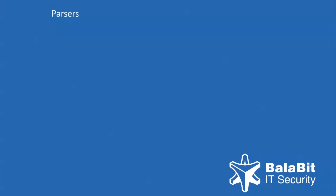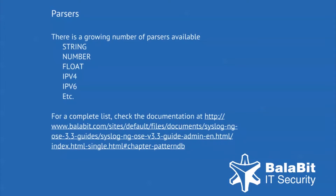Parsers are an important part of the Pattern Database. They look for characters in specific formats, like a series of integers or IP addresses. These include strings, numbers, and float, which recognizes numbers with decimals. IPv4 and IPv6 addresses are also included as default parsers. There are more default parsers available at the link at the bottom of the screen.